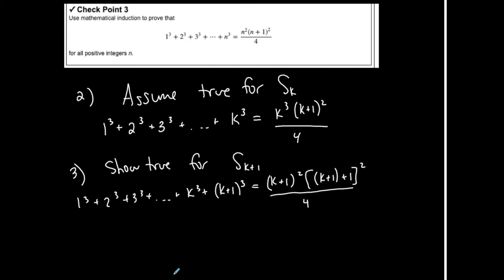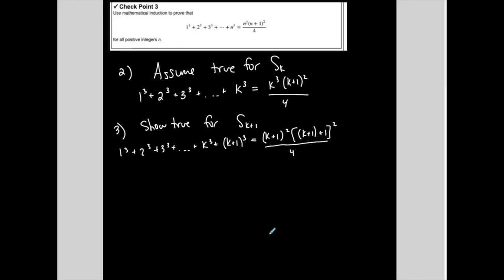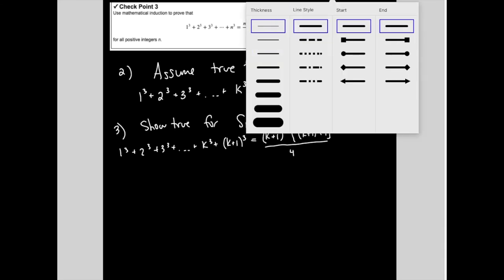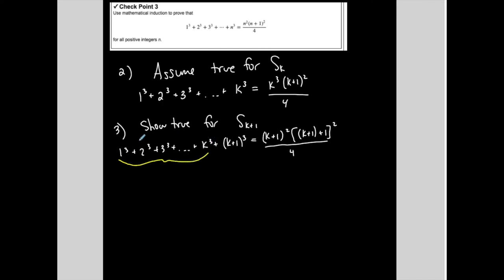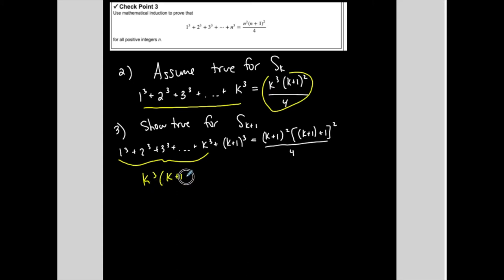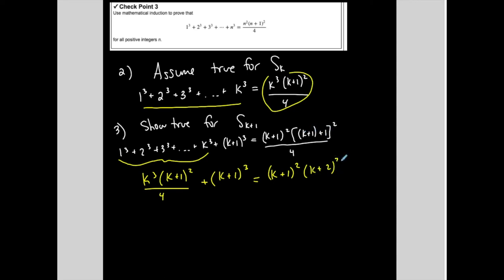So here's the algebra. We assume that it's true for the kth term, which means the sum of the first k terms should equal k squared times (k+1) squared over 4. So I can replace that whole sum with k squared times (k+1) squared over 4, plus (k+1) to the third. And that is equal to (k+1) squared times (k+2) squared over 4.